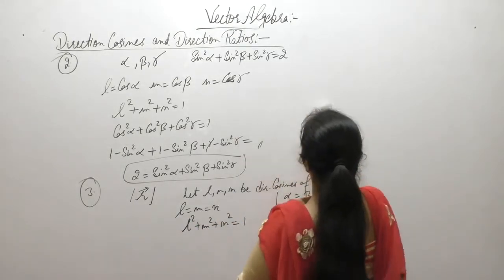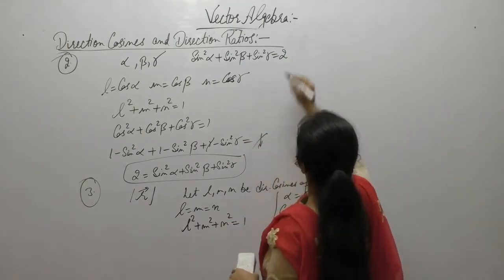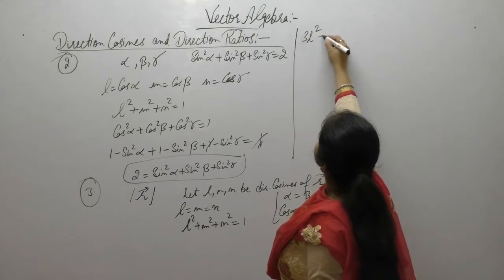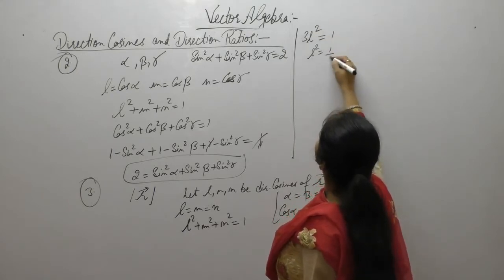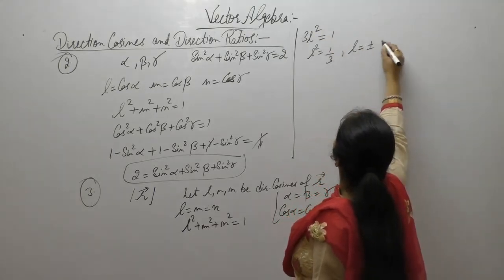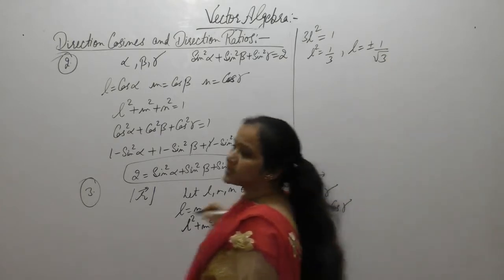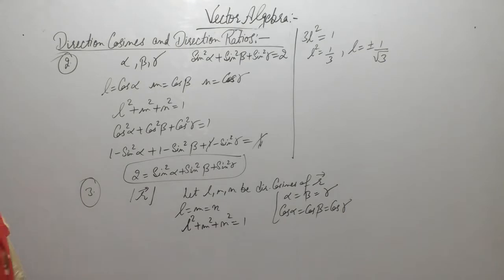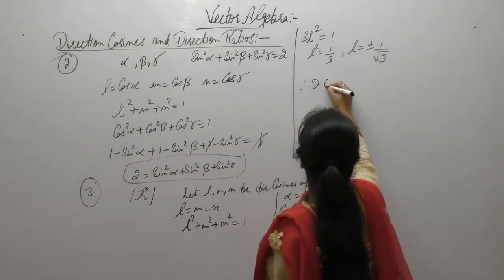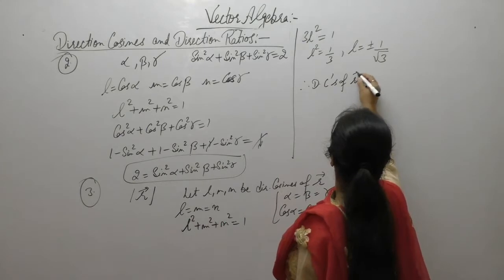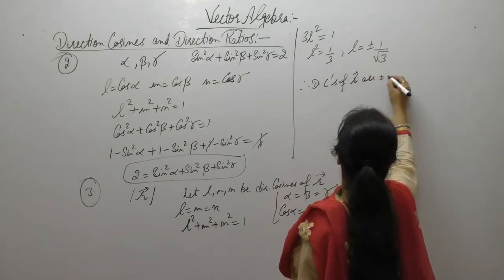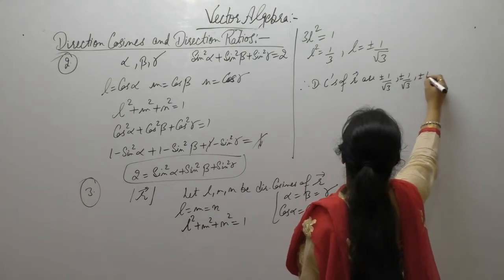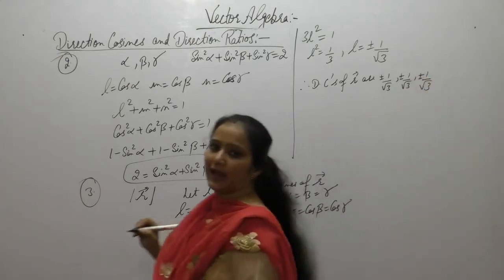Now l² + m² + n² = 1, and since l = m = n, we get 3l² = 1, so l² = 1/3, giving l = ±1/√3. This is the value of l, m, and n. Therefore the direction cosines of R are ±1/√3, ±1/√3, ±1/√3.